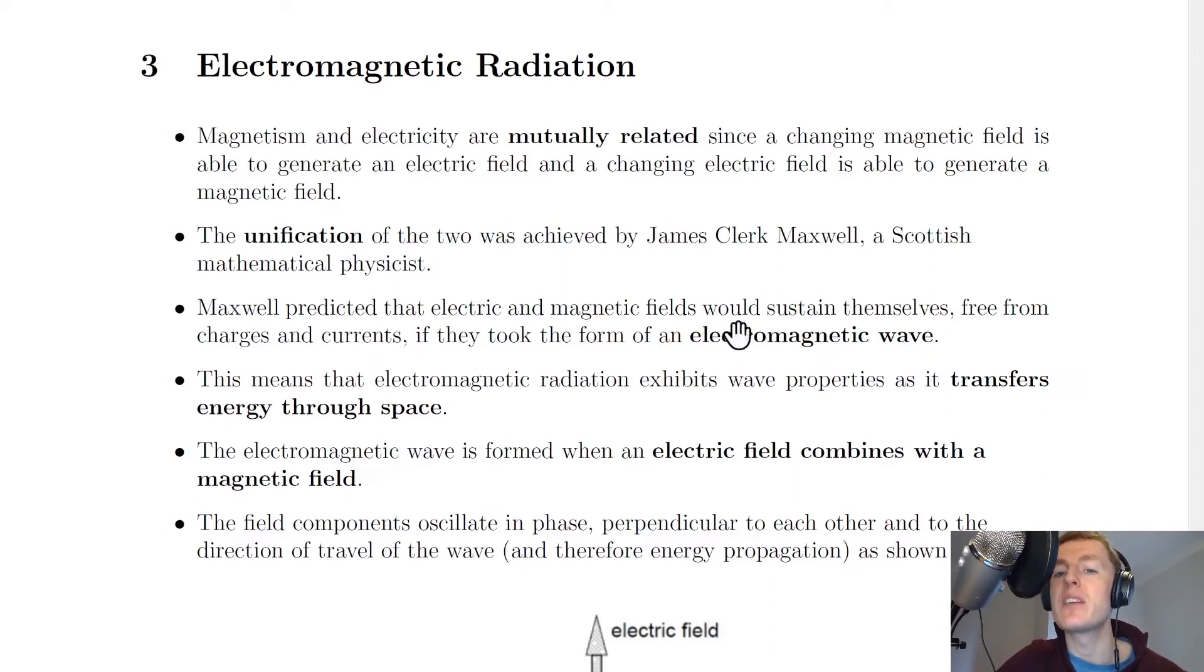Maxwell predicted that electric and magnetic fields would sustain themselves free from charges and currents if they took the form of an electromagnetic wave. He came up with four equations called Maxwell's equations which describe these waves.